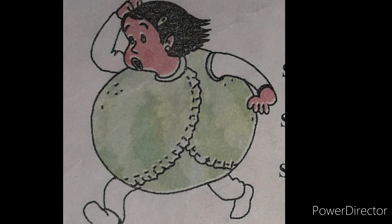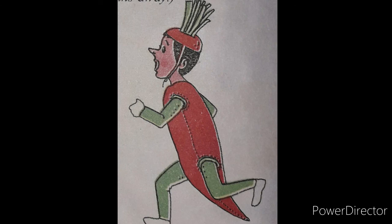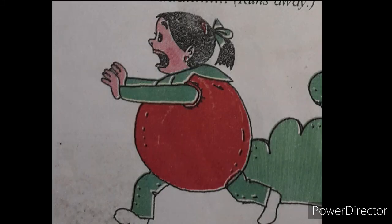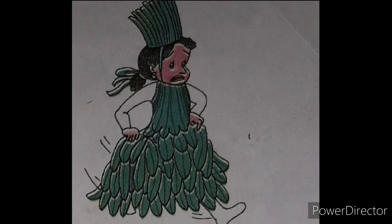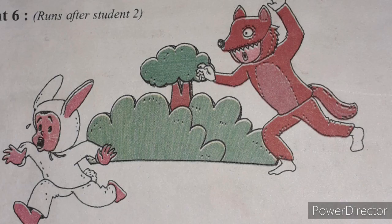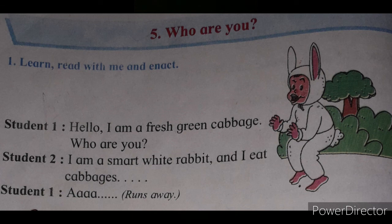In this drama or skit, they try to make others laugh. Here is also a skit for you — the name is 'Who Are You?' This skit will make you laugh for a while. Let's begin reading. The characters are: Rabbit, Cabbage, Carrots, Tomato, Green Leafy Vegetable, and Fox. The students have costumes of these vegetables, the fox, and the rabbit, and they are doing their act.